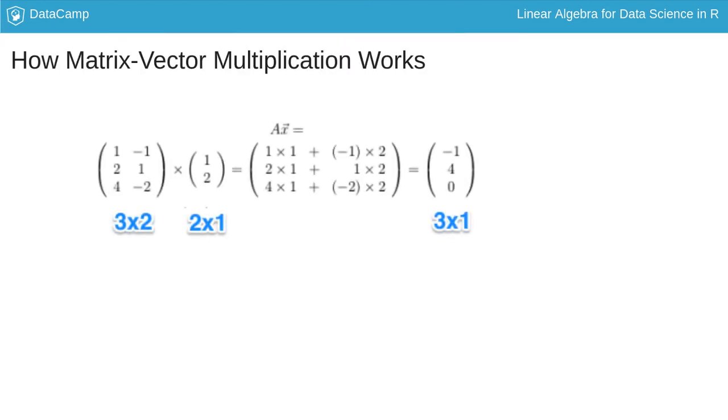A matrix with m columns and n rows can only be multiplied by a vector with n elements. The resulting vector then has m elements. Here, a three by two matrix is being multiplied by a two-dimensional vector to make a three-dimensional vector.